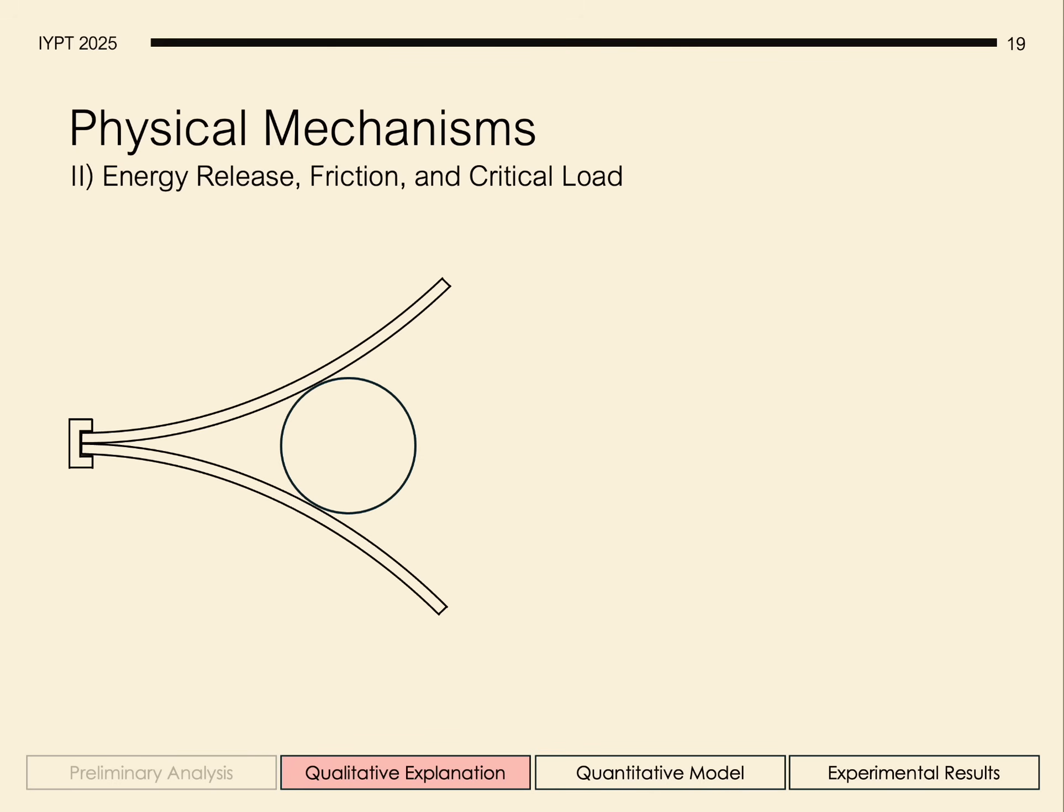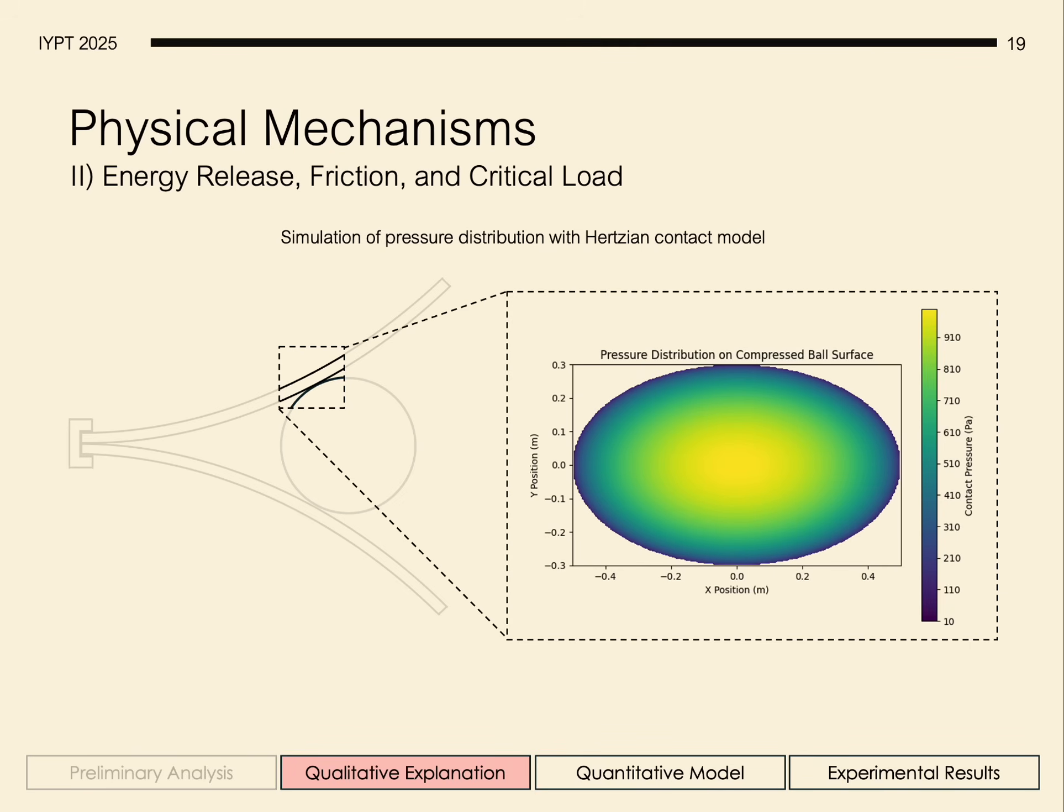We can use Hertzian contact theory to realize that there are elliptical contact areas between the ball and the rulers, with a non-uniform distribution of pressure, the max being at the center of the ball's surface.